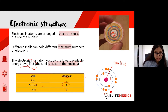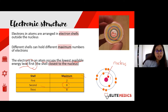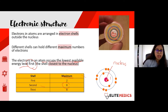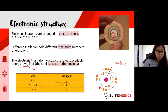For example, if an element has nine electrons, the first shell will have two and the second shell will have seven, giving a total of nine. That is the rule of how electrons fill the shells.